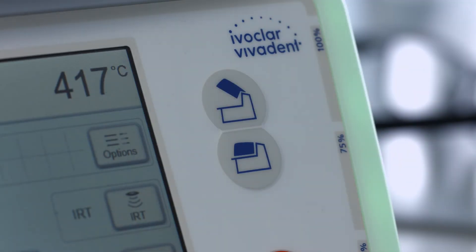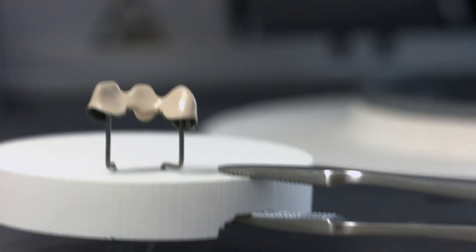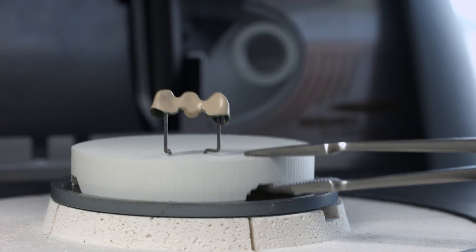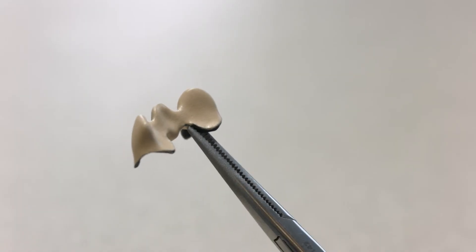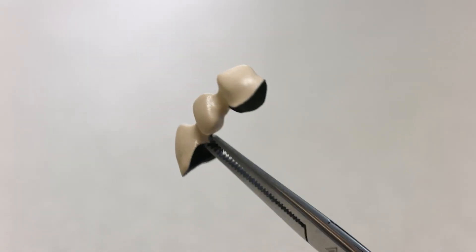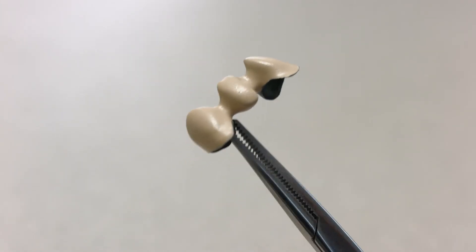Now, fire the second opaquer layer. After firing, the IPS style powder opaquer should have an even, silky matte appearance.